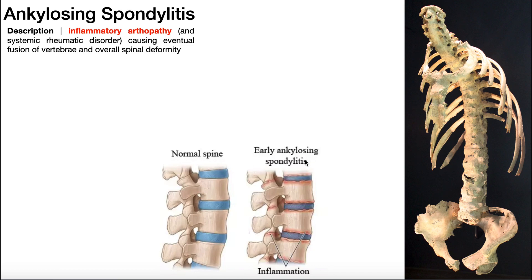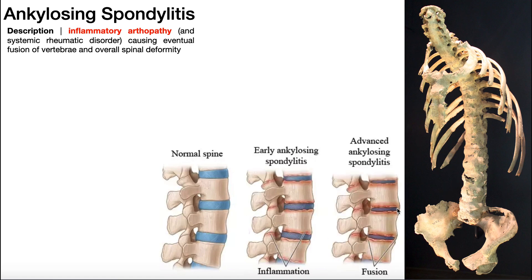In early ankylosing spondylitis, the vertebrae are not fused, but we see inflammation of the vertebrae really at the points in contact with the disc and also here at the facet joints, posteriorly. This inflammation eventually triggers cells to come in and try to repair the situation, and in repairing the situation, they lay down bone. Over time, you get more and more bone laid down, and eventually the vertebrae are actually fused together. If you look anteriorly here at these vertebral bodies, you can see that they have fused, whereas in the early stages we still have exposed disc, which is normal.